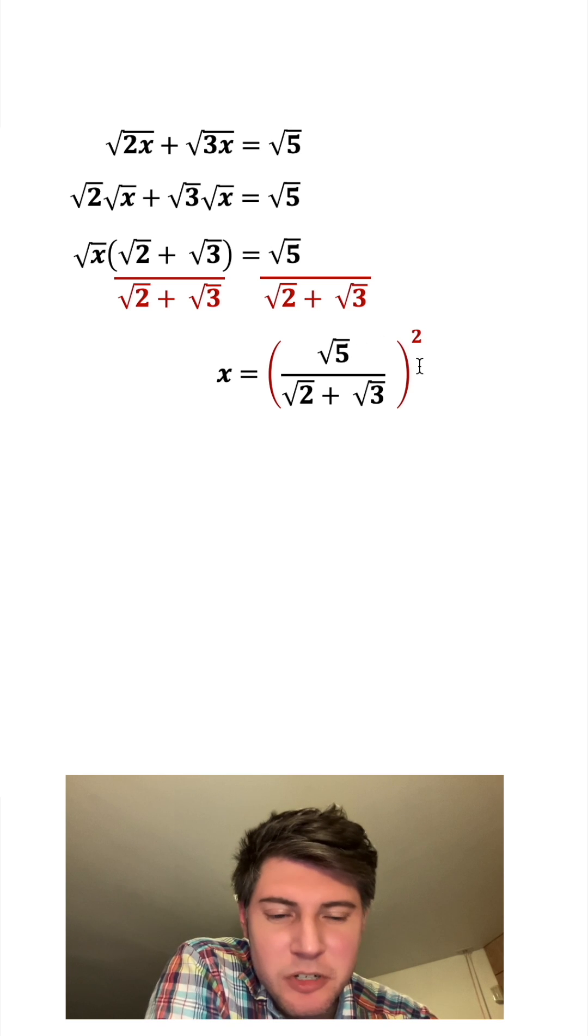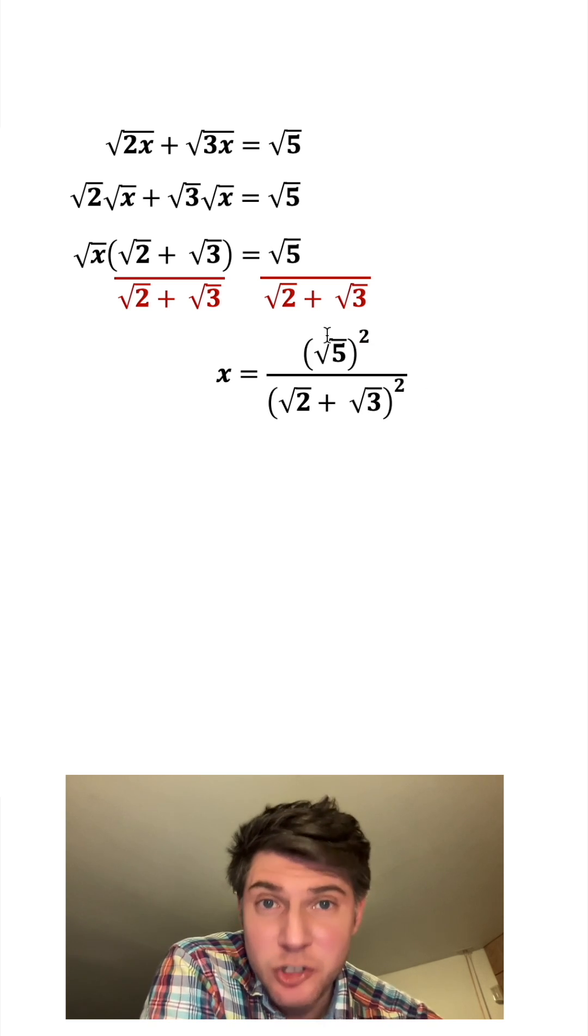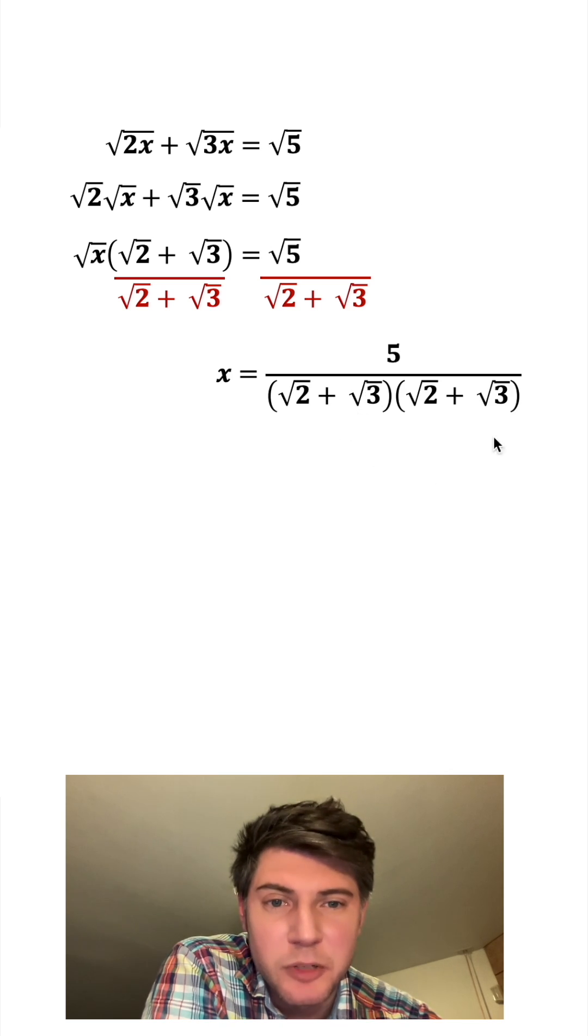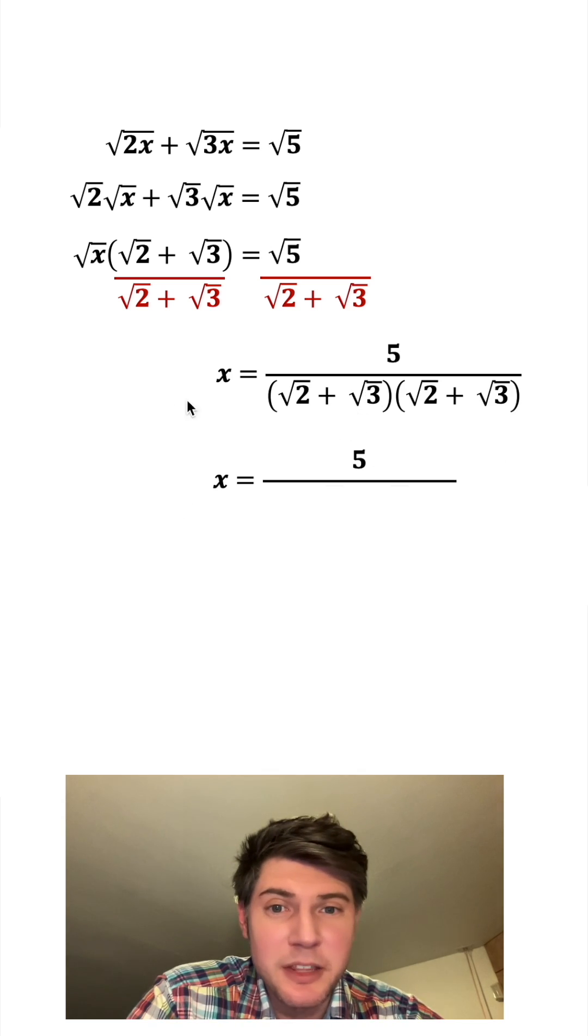This squared can distribute to both the top and the bottom, and then the square root of 5 squared is 5. And on bottom, this thing squared just means this thing multiplied by itself. So now we can multiply this out.